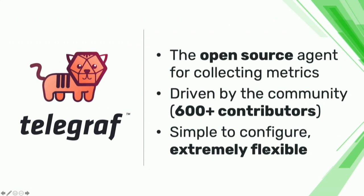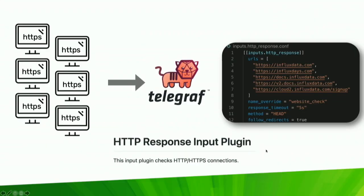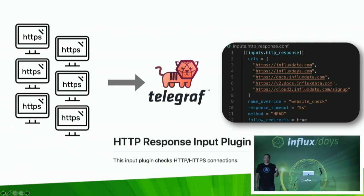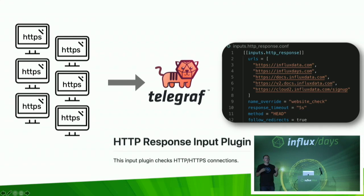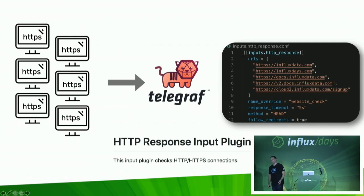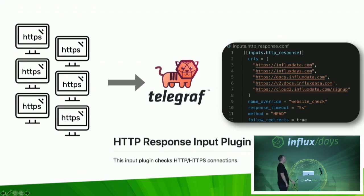Telegraf is how we go out, pull information, monitor the data from our website, and pump it into Cloud. The first part of this demo: data is being collected by Telegraf — we only need two plugins. I'm going to use the HTTP response plugin for pulling data in. There are over 200 plugins in Telegraf, including a regular HTTP plugin that fetches data from websites, and a ping plugin that can ping thousands of servers. But we're going to use the HTTP response plugin.